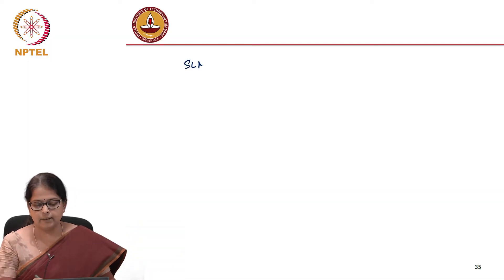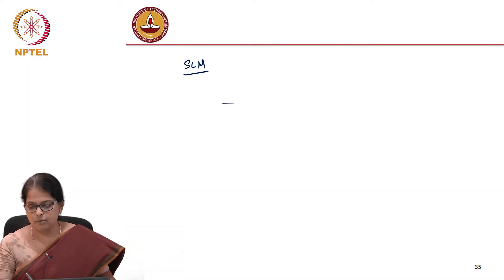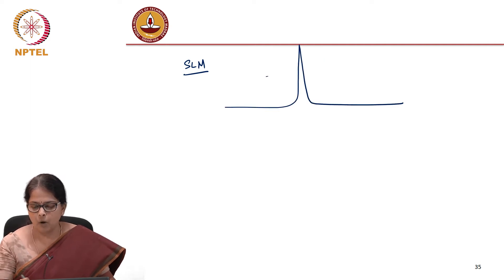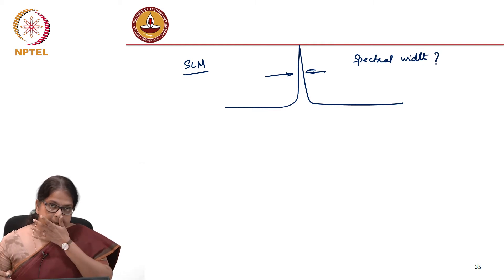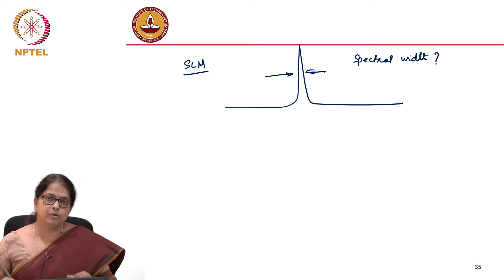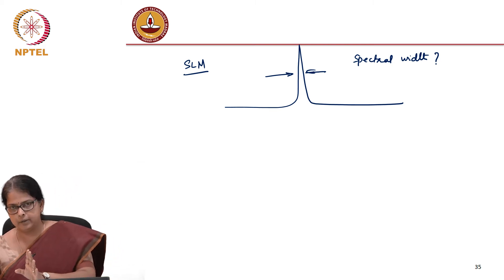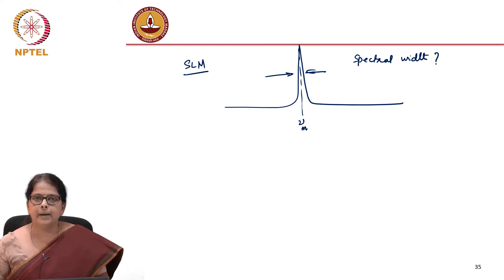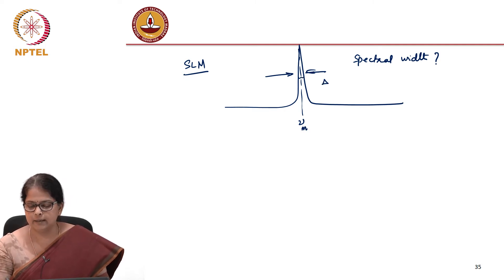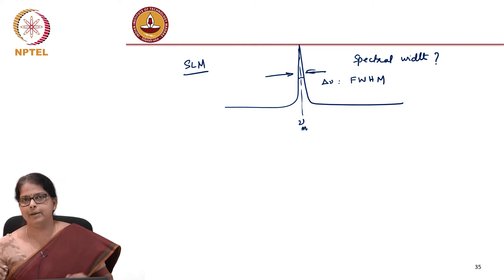In a single longitudinal mode laser, where only one mode is supported by the laser, what decides the spectral width? It is not going to be a delta function. The phase condition gave us only certain allowed frequencies — it did not say much about the spread. So the phase condition gave us only the values of ν_m, but we would like to know what is delta ν, or the full width at half maximum of a Fabry-Perot mode.